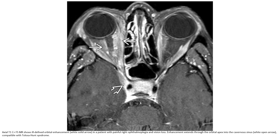Again, this is the axial post-contrast T1 fat-saturated image. There is defined orbital enhancement and the patient presents with painful proptosis and vision loss. Enhancement extends through the orbital apex into the cavernous sinus, compatible with Tolosa-Hunt syndrome.